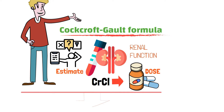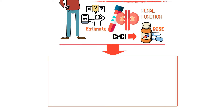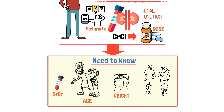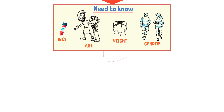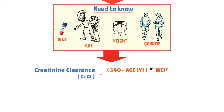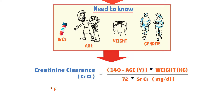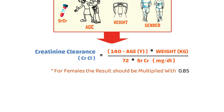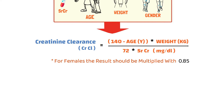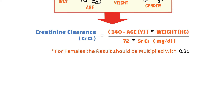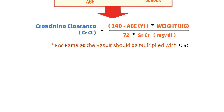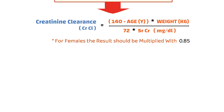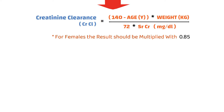To calculate the creatinine clearance using the Cockcroft-Gault formula, you will need to know the patient's serum creatinine level, age, weight, and gender. The formula is as follows: creatinine clearance equals 140 minus age in years, multiplied by weight in kg, divided by 72 and serum creatinine level. For females, the result should be multiplied by 0.85, because they typically have lower muscle mass than males. Once you have these values, simply plug them into the formula and solve for creatinine clearance.